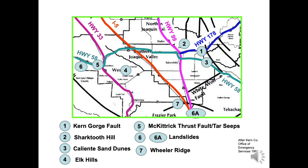The seven features to be discussed are the Kern Gorge Fault, Shark Tooth Hill, the Caliente Sand Dunes, Elk Hills, the McKittrick Thrust Fault and Tar Seeps, Landslides, and Wheeler Ridge. These are represented by light blue labels. Many features are at the edge of the valley because geologic complexities are more easily seen on untilled land. A few features must be observed from public roads adjacent to the five highways outlined in color. Please drive safely in traveling all roads.